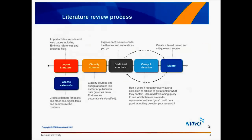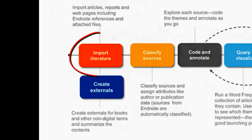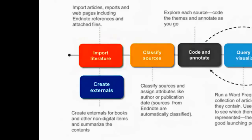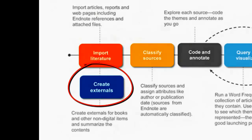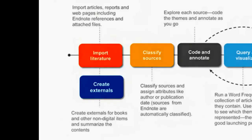This diagram shows you how the literature review process can be conducted using NVivo. First, you will need to import all sources of information that you will use in your literature review. Sources can be imported manually, for instance PDFs, reports and websites. Or you can import your EndNote library, including attached files. If you have non-digital items, for example books, you will need to create externals for them and summarize the main content.